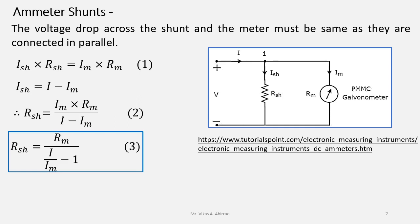If you express the ratio of current to be measured, that is I upon the meter current Im by the letter M, then equation 3 can be written as RSH equals Rm upon M minus 1.